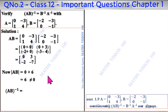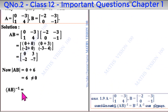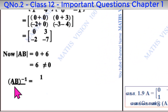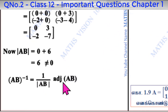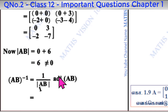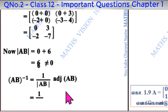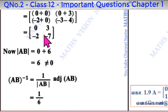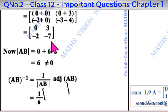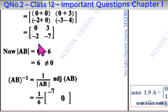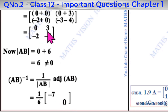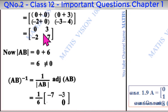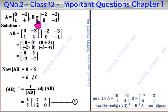Now AB inverse equals 1 by determinant of AB into adjoint of AB. That is 1 by 6. For the adjoint, we swap the principal diagonal positions — 0 and minus 7 — and change the sign of the other diagonal — minus 2 becomes plus 2 and 3 becomes minus 3. This gives us the left-hand side, AB whole inverse.